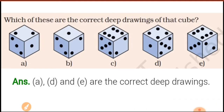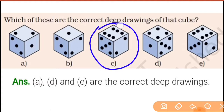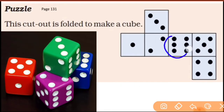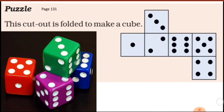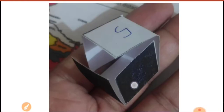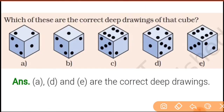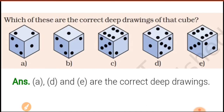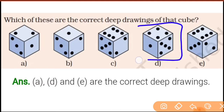Number C: top view mein six hai, aur then five aur two. Agar hum top pe six karein toh five aur two match nahi hongi — yeh match hoongi nahi. This will be clear when you make your dice and check. So drawing C is also not a correct deep drawing.